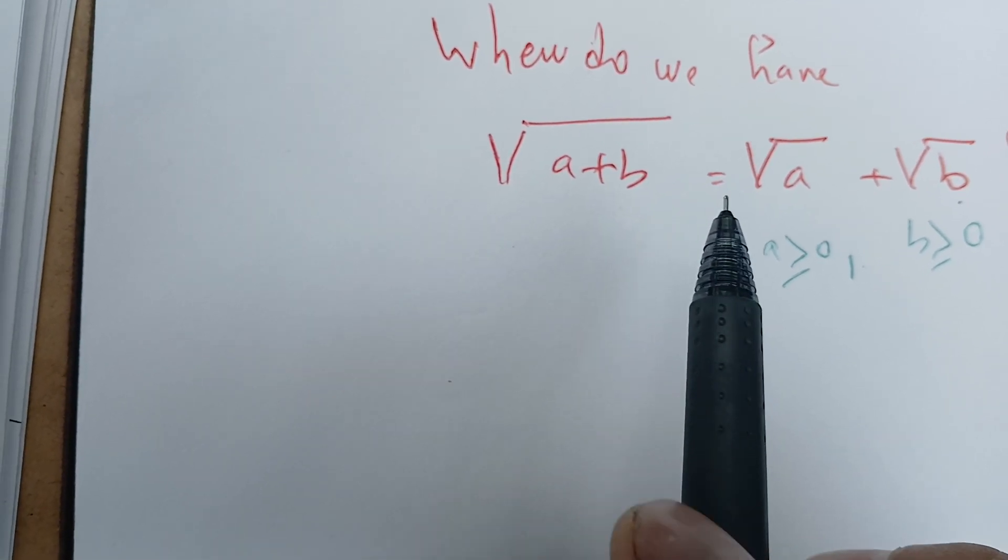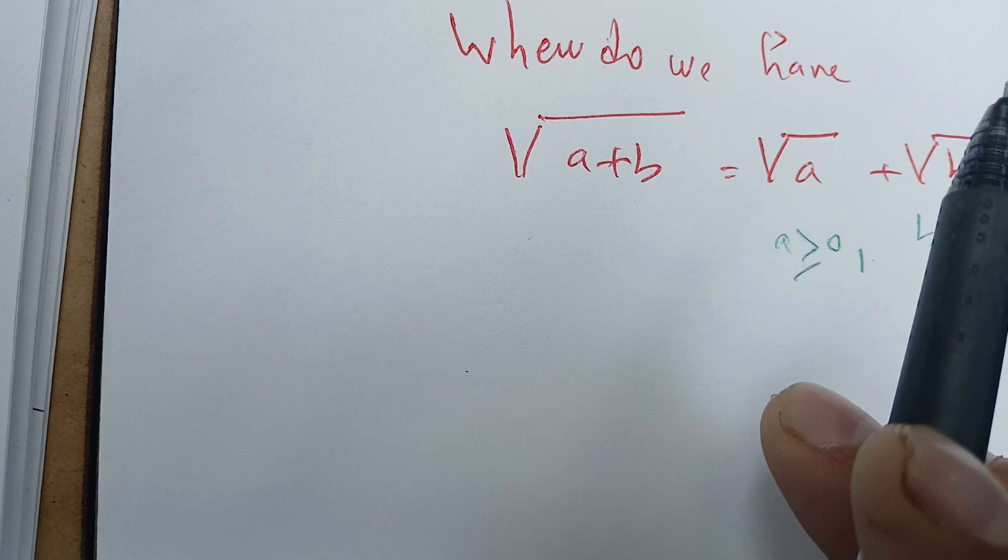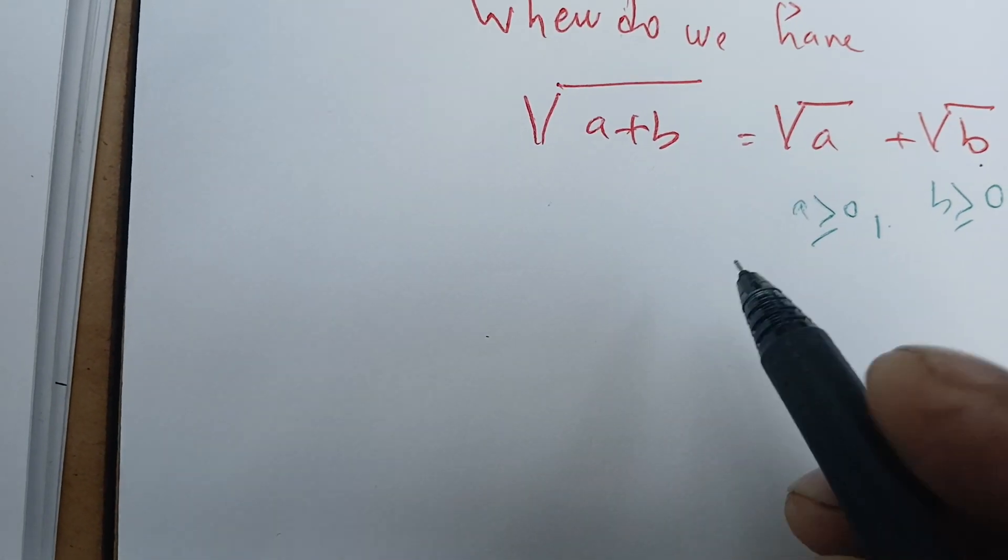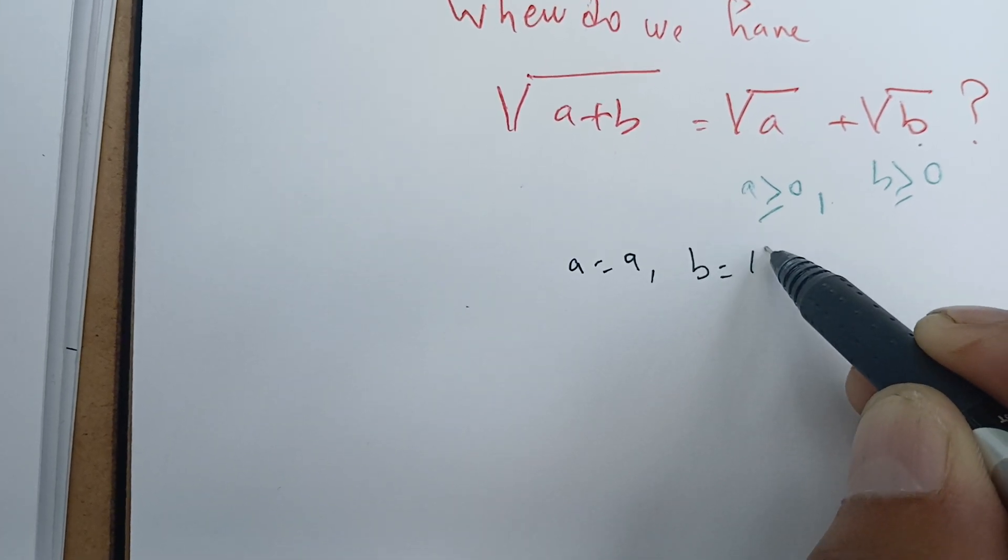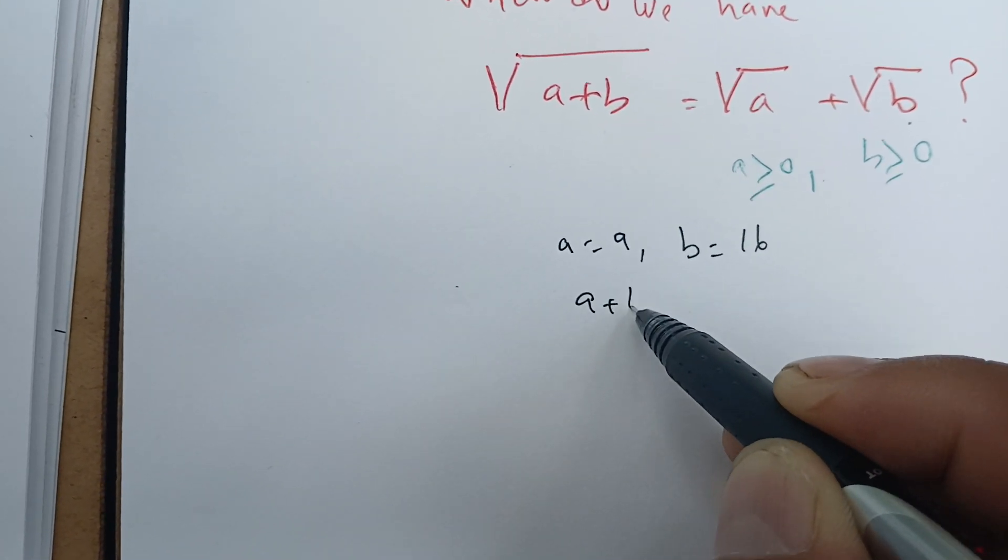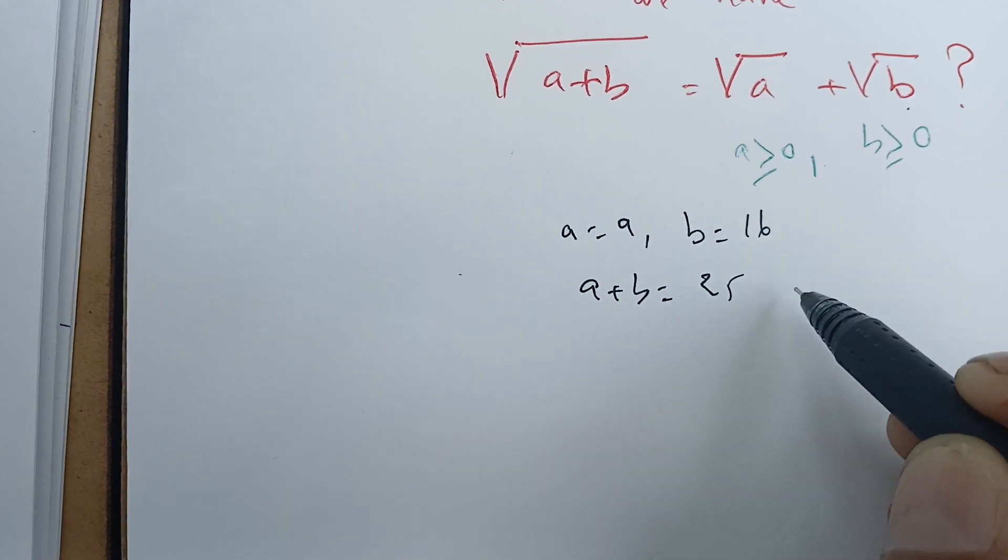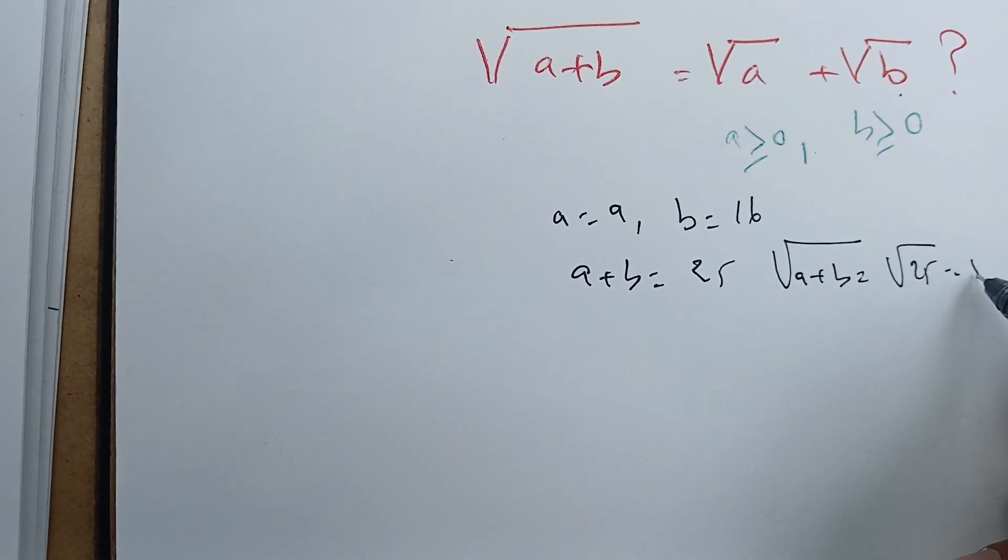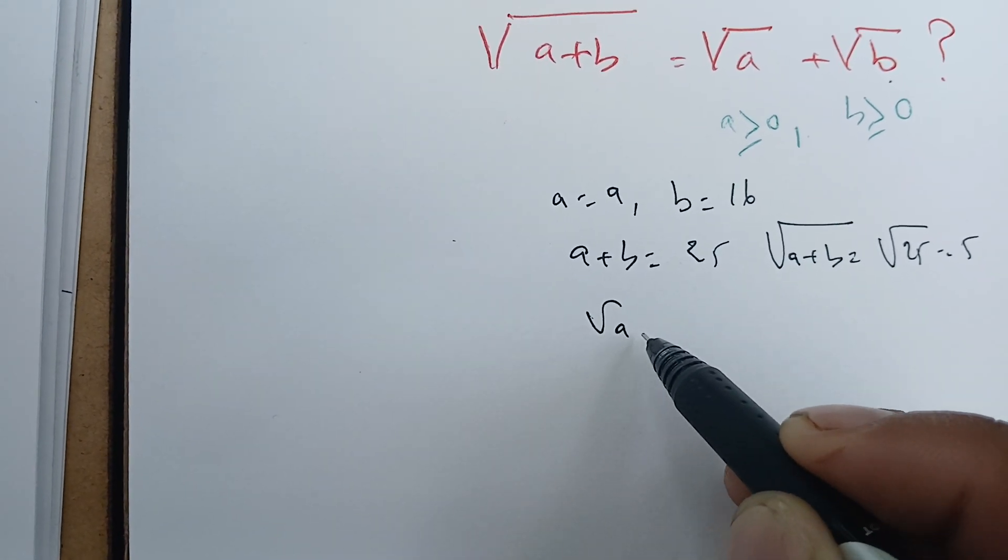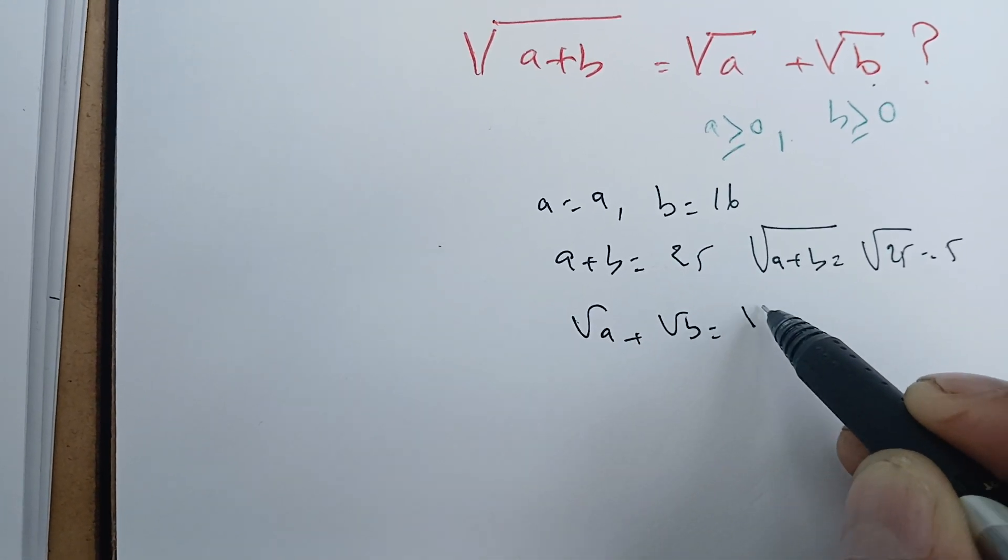To see why, let's take a equals 9 and b equals 16. We have a plus b is 25, and therefore the square root of a plus b is the square root of 25, which is 5. And the square root of a plus the square root of b is the square root of 9 plus square root of 16.